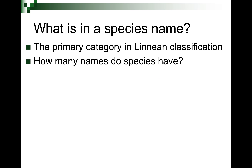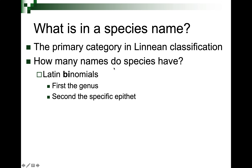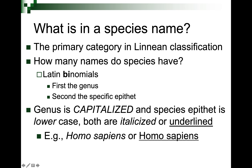How many names does a species have? They are binomial, meaning two. The first is the genus name and the second is what we call the species epithet. The genus is capitalized and the species epithet is lowercase, and both are italicized or underlined. So it could be written as Homo sapiens — capital genus, lowercase species epithet, italicized — or Homo sapiens underlined.